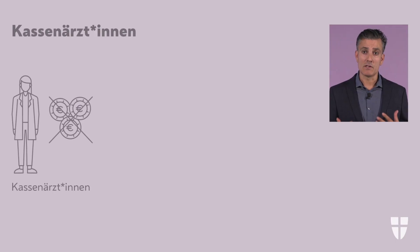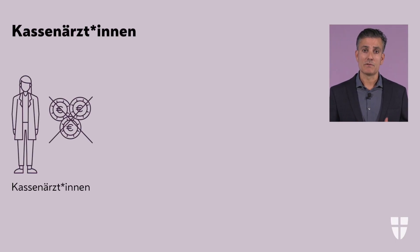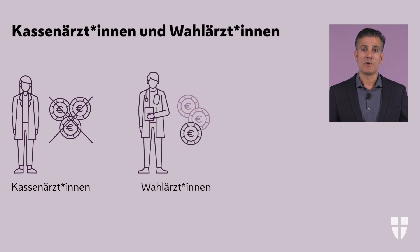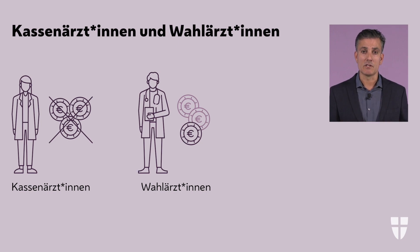In Austria there is a free choice of doctor, which means you have the right to choose your own physician freely. Basically there are: one, panel doctors which are free of charge for insured persons; and two, private physicians which you pay for yourself. The health insurance company refunds part of the cost upon application.